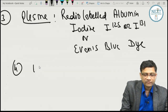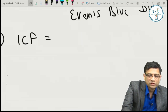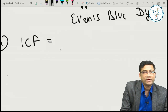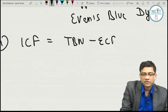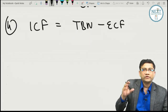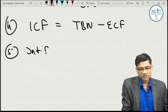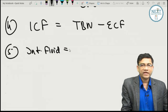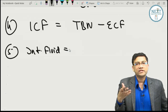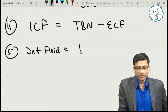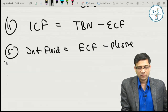ICF cannot be measured by a single dye because you cannot inject dye directly into cells. So ICF is calculated indirectly as: ICF = total body water − ECF. Similarly, interstitial fluid cannot be measured directly, so it is calculated as: interstitial fluid = ECF − plasma.